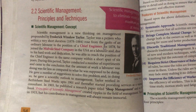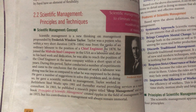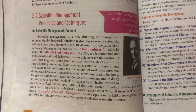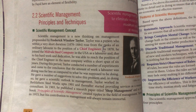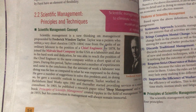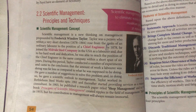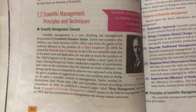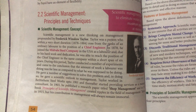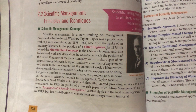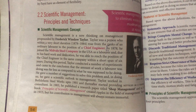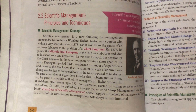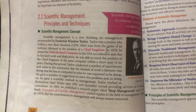F.W. Taylor joined a steel company in 1878 as a laborer and through hard work and dedication rose to become chief engineer of the same company. He then carried out research and observed the outcomes. He found that workers could do more work than they were currently doing, yet they were working less. He was also amazed that owners had no concern about wastage.